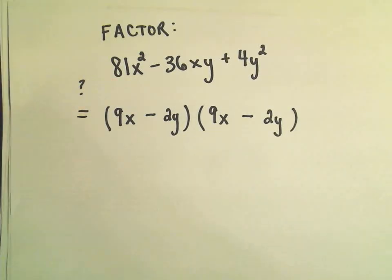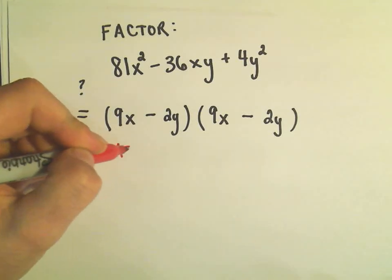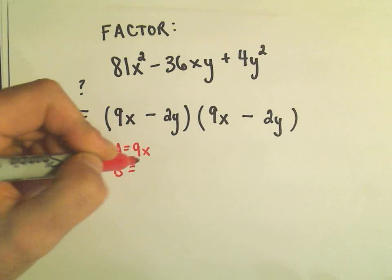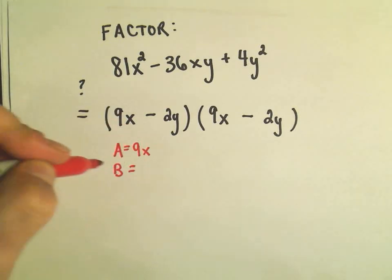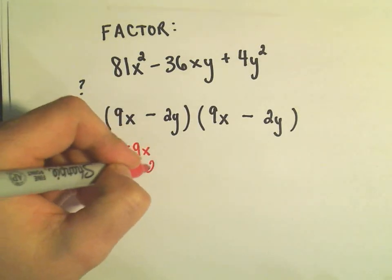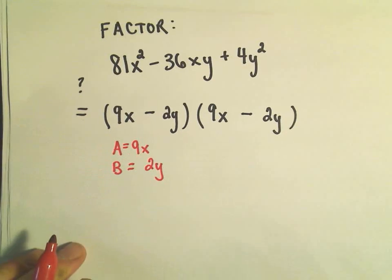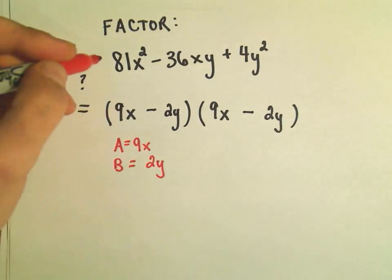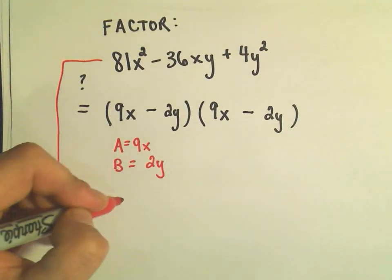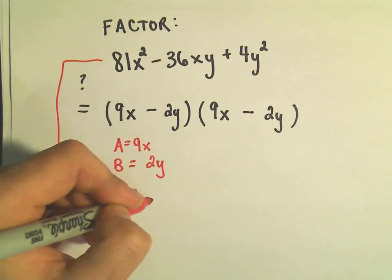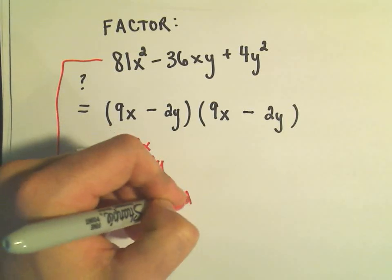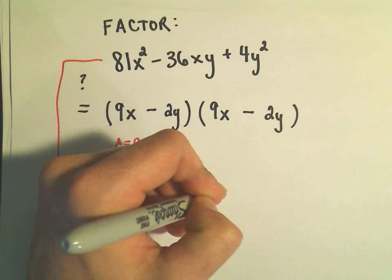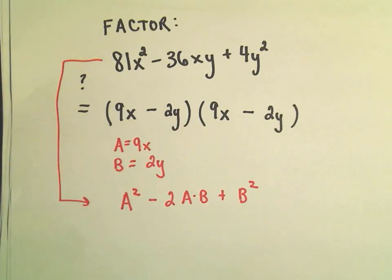You can check that if we think about our a as being 9x, and if we think about our b as being 2y, you can think about this original problem as being in the form a² - 2ab + b².